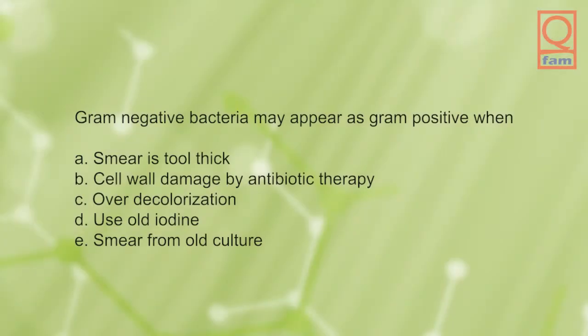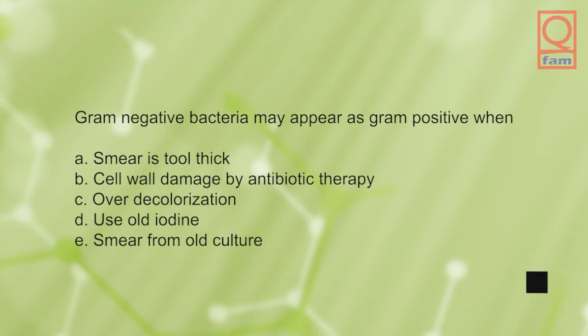Gram negative bacteria may appear as gram positive when: A) smear is too thick, B) cell wall damage by antibiotic therapy, C) over-decolorization, D) use of old iodine, E) smear from old culture. The answer is B, cell wall damage by antibiotic therapy.